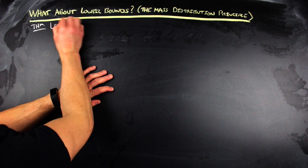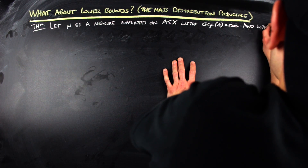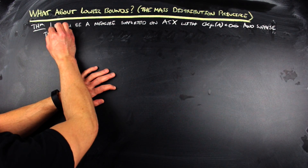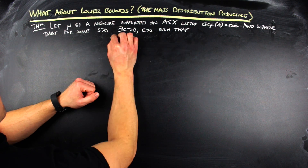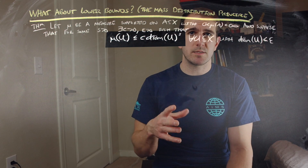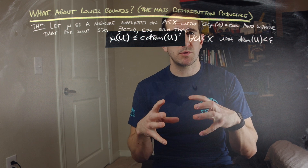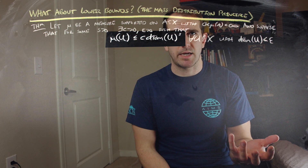The theorem I'm going to present here is the mass distribution principle. There are other mass distribution methods for estimating Hausdorff dimension, but this one gives a lower bound, and it requires some comfort with measure theory. Let mu be a measure supported on a subset of X with 0 less than mu of A less than infinity. Suppose that for some s greater than 0, there exists c greater than 0 and epsilon greater than 0 such that the measure of U is less than or equal to c times the diameter of U to the s, for every U subset of X such that the diameter of U is less than epsilon.